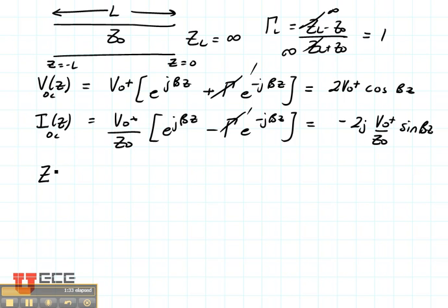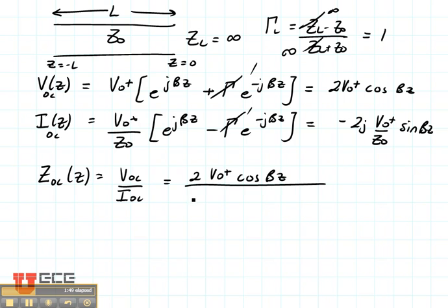Now let's consider the impedance. If we're interested in the impedance of an open circuit, we simply need to take the ratio of the open circuited voltage to the open circuited current. And that's going to give us 2V0+ times the cosine of βz divided by minus 2jV0+ divided by Z0 times the sine of βz.